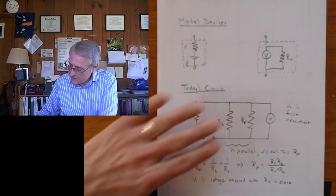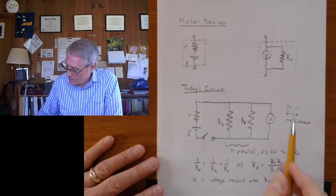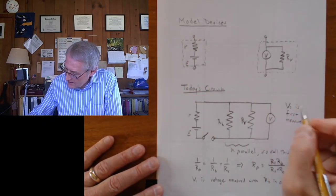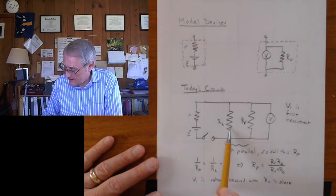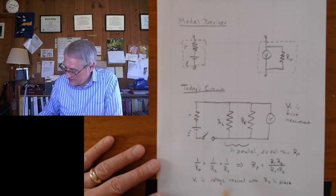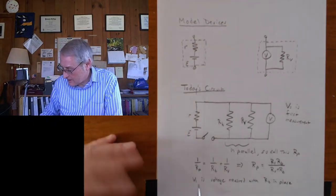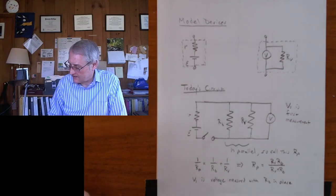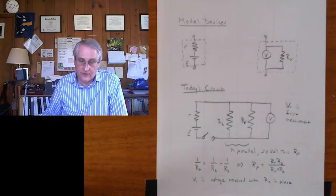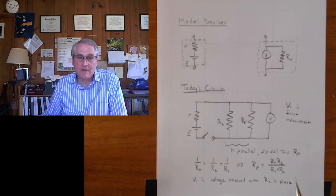So first you make a measurement without the decade box, and you call that V naught. And then you make successive measurements, more than one. You change the resistance on the decade box several times, and each time we'll call that V1. I guess we could call it V1, V2, V3, but the handout says V1, with the decade box.